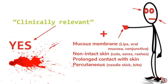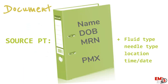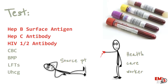For any kind of wound, make sure you provide local wound care — wash it out with soap and water, and irrigate any mucosa or eyes that were exposed. Make sure you document in the chart the information about the source patient, as this is especially important for follow-up. The patient is going to have to go see infectious disease or employee health, and they'll need that link back to the source patient.